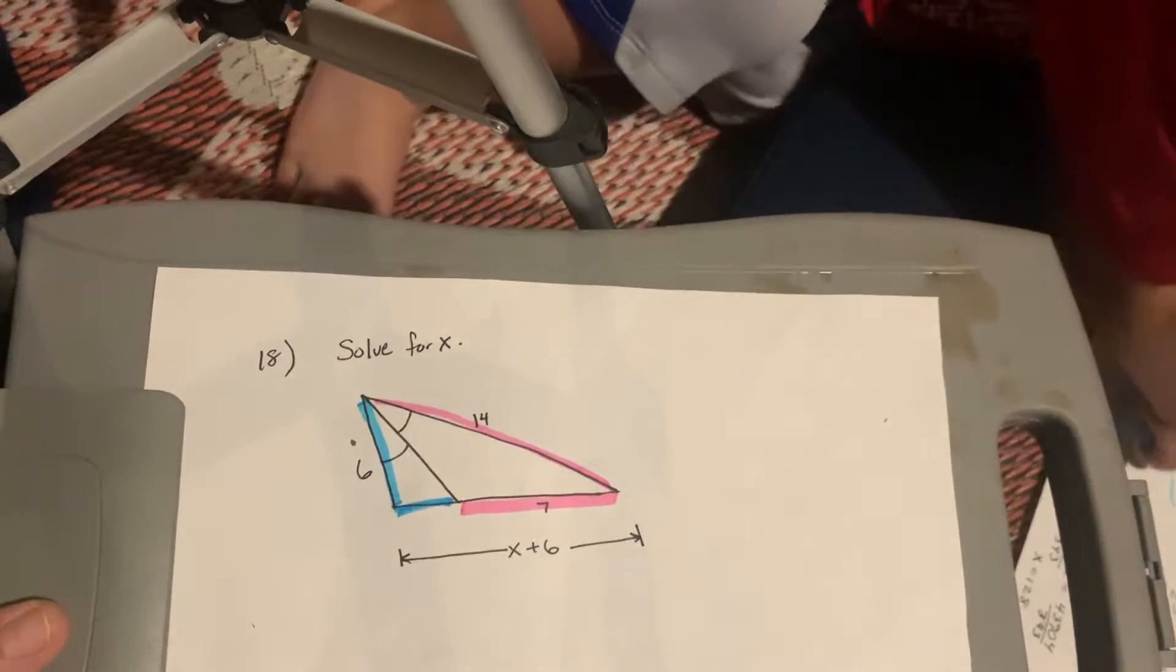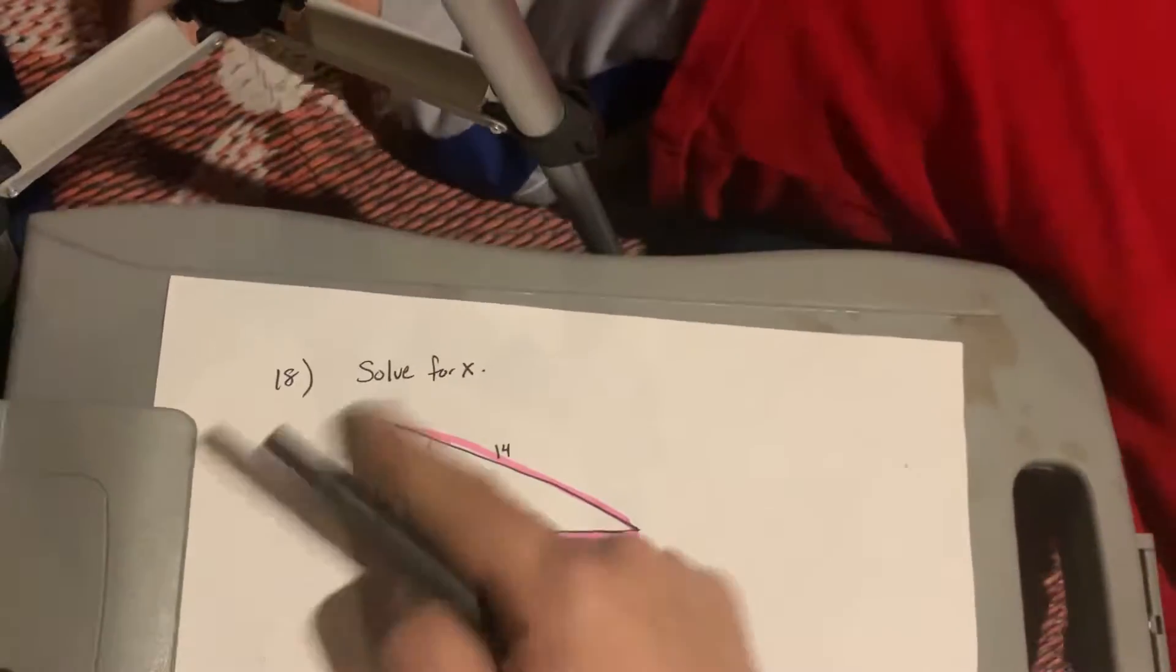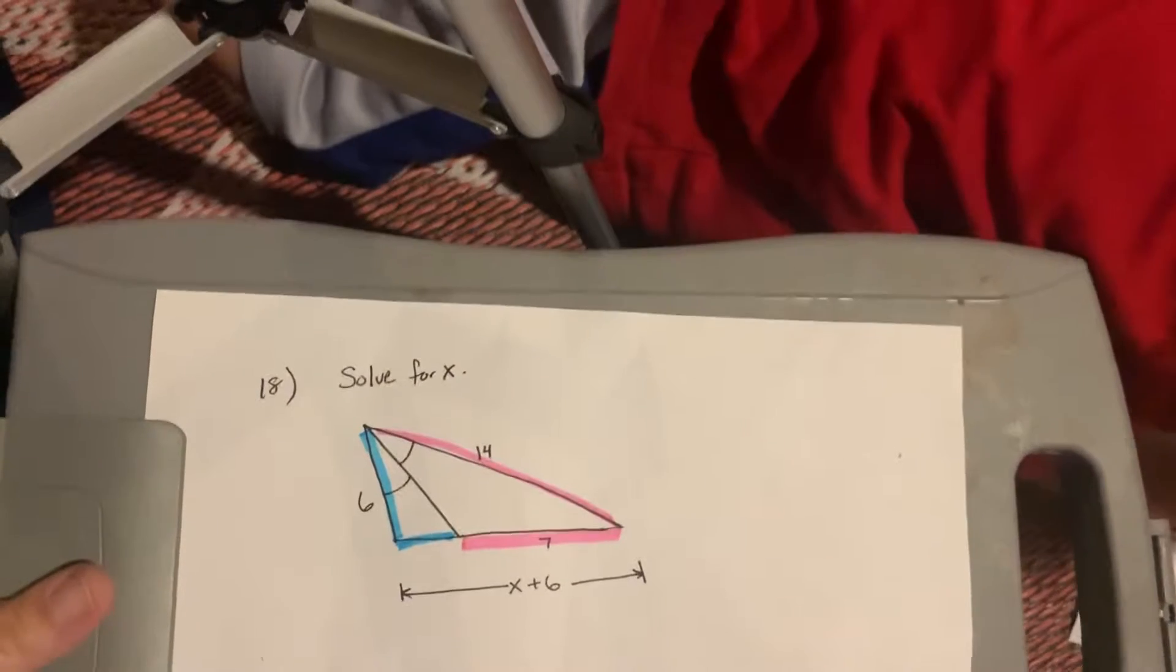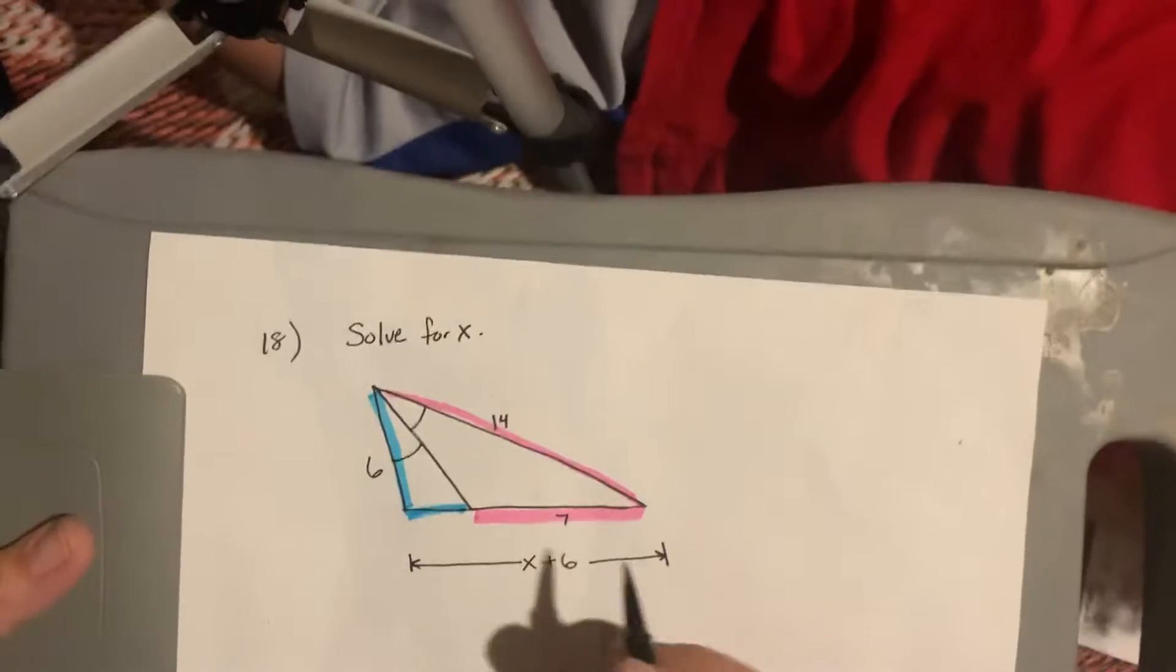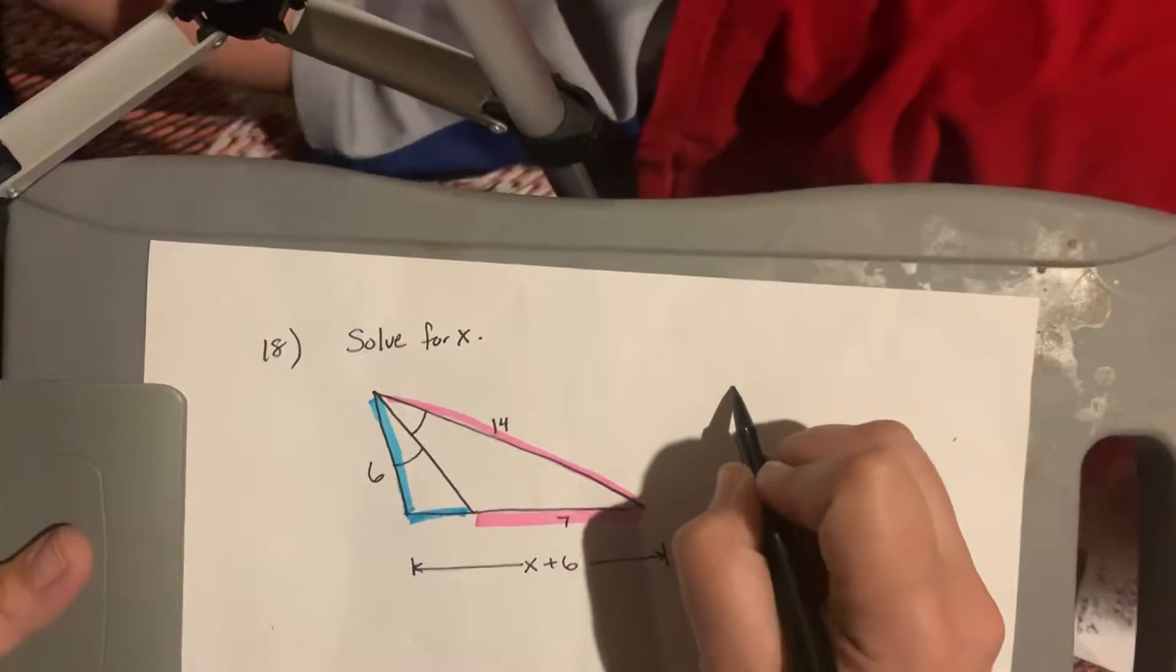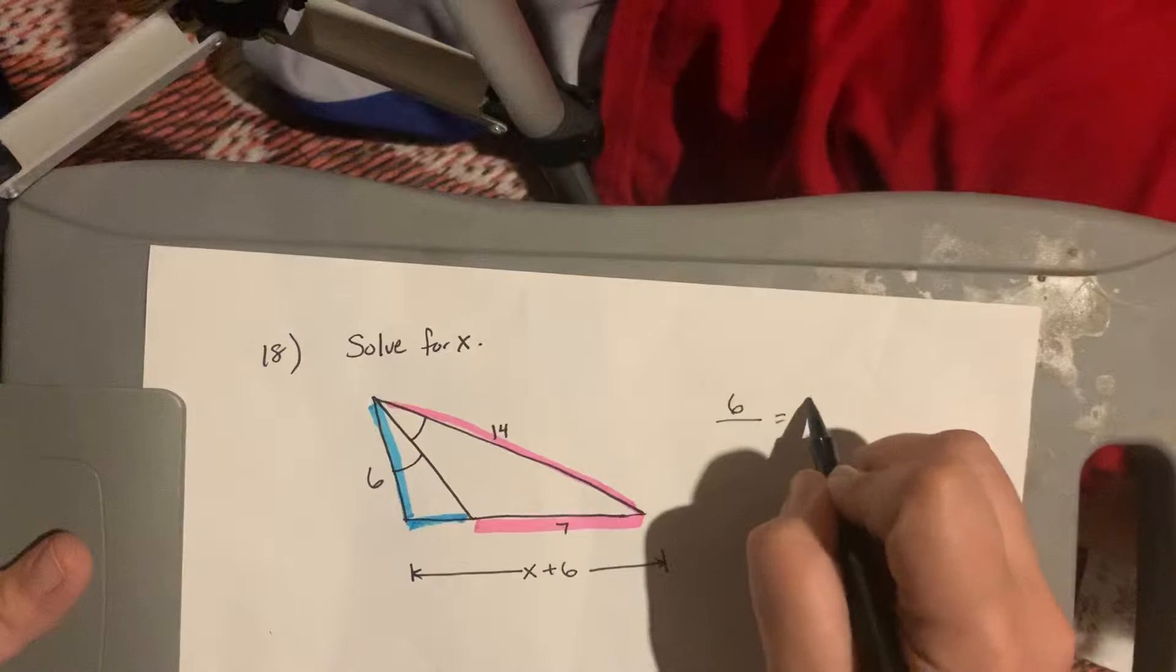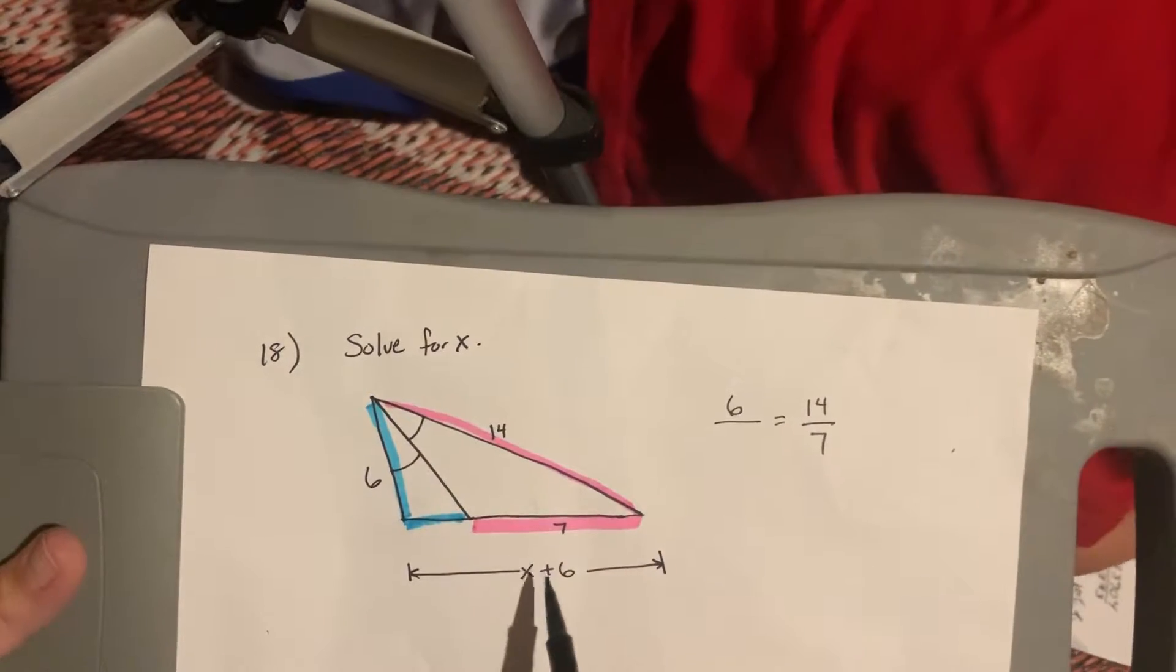So, that being said, we basically need that little short blue side. We need to write something there because we don't have anything to write there in our proportion. This x plus 6 helps us because it's the whole thing, but it's not going to help us in our proportion. So, our proportion is going to be 6 over the thing I don't know yet, equals 14 over 7. I've got to solve for x, so I've got to figure out what this x is.